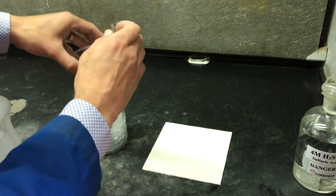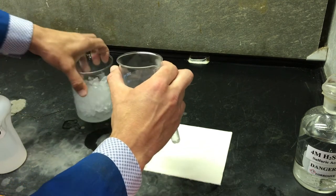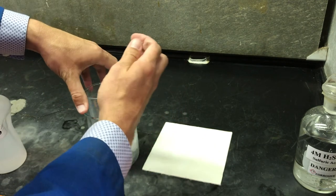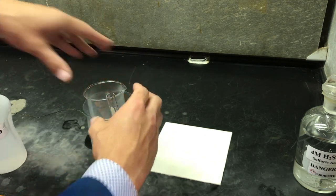As the reaction beaker cools, the solubility of our potassium alum decreases until it crystallizes out of solution in an isolated solid, which we can filter.